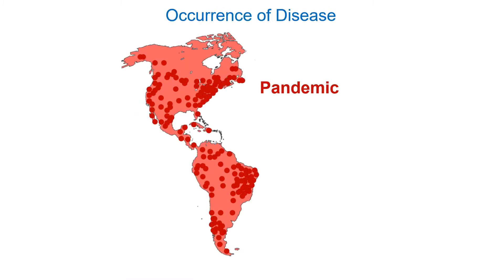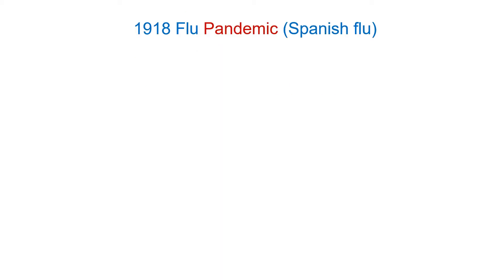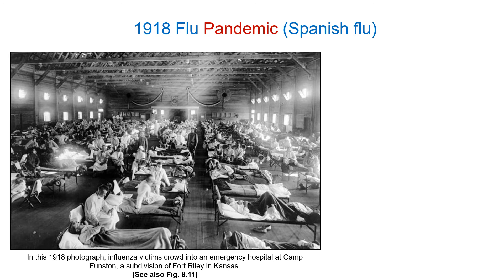A pandemic is basically an epidemic that happens in multiple geographical locations, often worldwide. In 1918 we had a very scary pandemic sometimes called the Spanish flu — it didn't originate in Spain, but the Spanish media was the first to report it. You can see a photograph of an air force base where an aircraft hangar was converted into a temporary hospital with hundreds of beds.